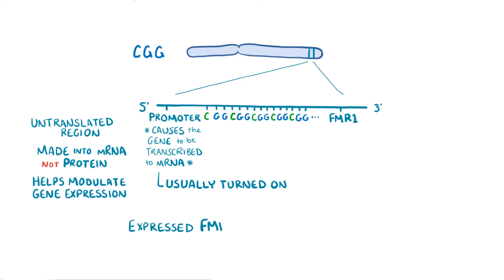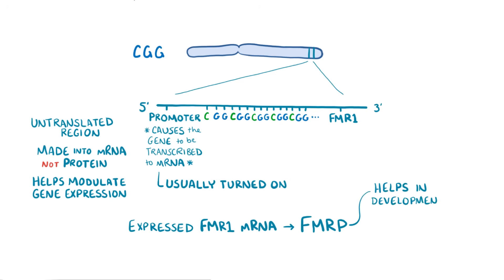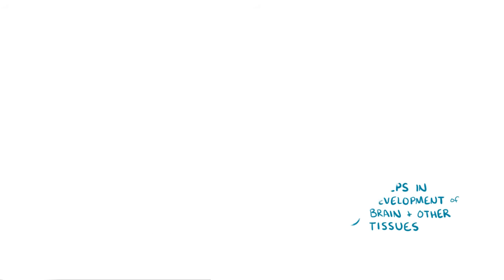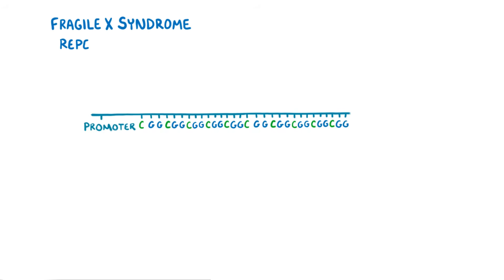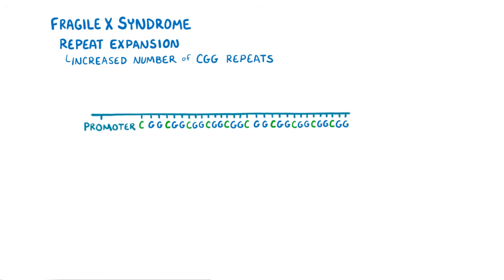Expressed FMR1 mRNA gets translated into Fragile X Mental Retardation Protein, or FMRP, and helps in development of the brain and other tissues. In Fragile X syndrome, there's a repeat expansion, meaning there's an increased number of CGG repeats in the gene.